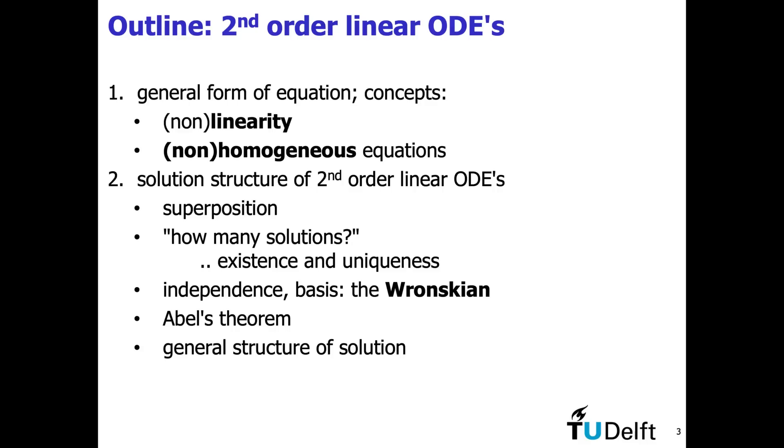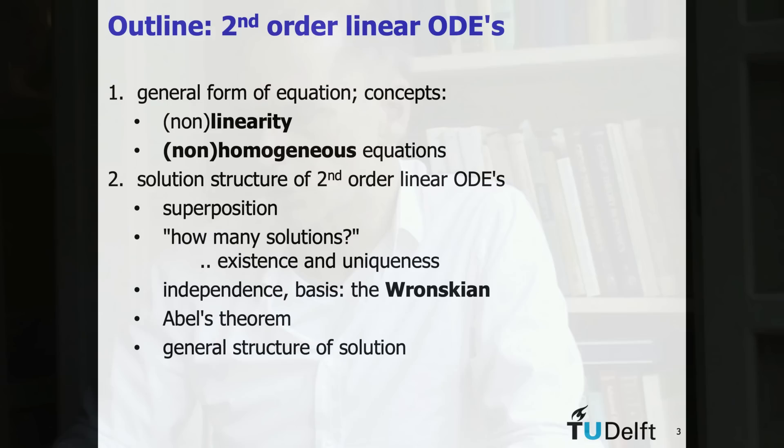After that I will start talking about independence and basis, and there is something called the Wronskian. About that there is Abel's theorem. All of that is ingredients for the theory of the general solution. The Wronskian is a good thing to have for this theory, and in episodes to come when we learn practical techniques to solve differential equations, the Wronskian plays a key role as a tool. I recommend to study it — firstly to understand the theory, but also to have a clear understanding and to memorize what the Wronskian is like so that you can use it for solution methods in upcoming episodes.